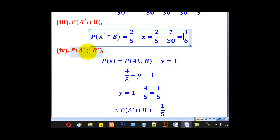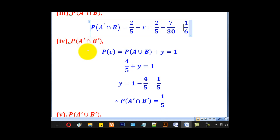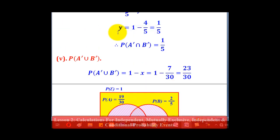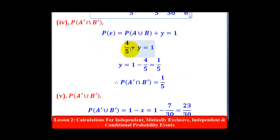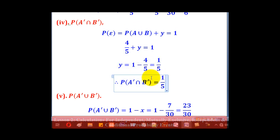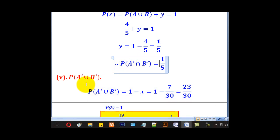For part iv, they wanted P(A complement ∩ B complement), which is the value of Y. Take the whole union 4/5 plus Y equal to the total probability 1. Solving gives Y equals 1/5. So P(A complement ∩ B complement) equals 1/5.